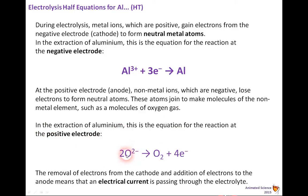So it's oxygen, which is two minus, two of them, go to O2 plus four electrons. And the removal of electrons from the cathode and the addition of electrons to the anode, mean that there is an electrical current passing through the electrolyte.